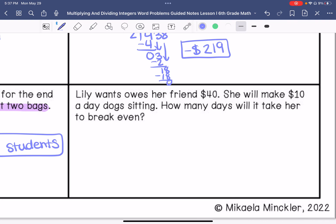Lily owes her friend $40, so negative 40. She will make $10 a day dog sitting. How many days will it take her to break even? So we have negative 40 divided by 10.